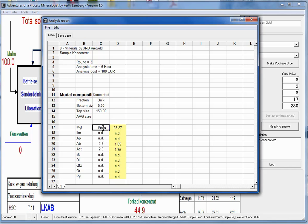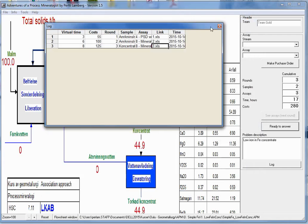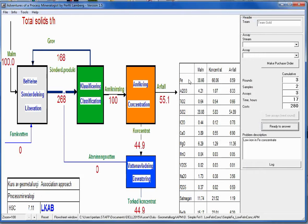The option that there would be a change in chemical composition of magnetite doesn't seem to be the one which makes the iron lower. So is this then the liberation problem? Now we take Anriknings Ingoende, the feed to the concentration. And then we take Mineral Liberation Analysis.